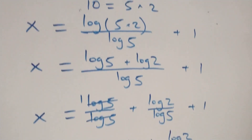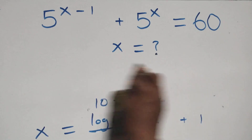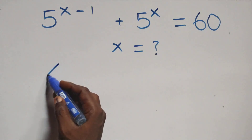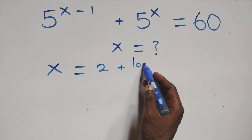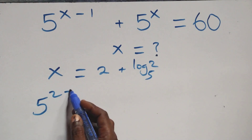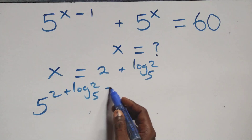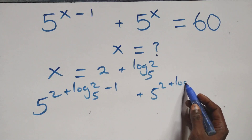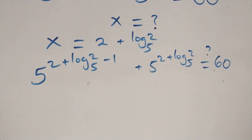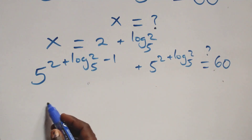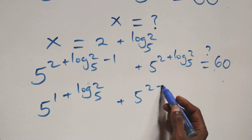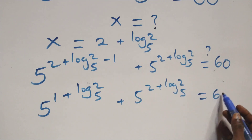Let's check whether this satisfies the given problem. We substitute x equals 2 plus log₅2 back in. This gives 5 raised to power (2 plus log₅2 minus 1), plus 5 raised to power (2 plus log₅2), equals 60. Simplifying the first exponent: 5 raised to power (1 plus log₅2), plus 5 raised to power (2 plus log₅2) equals 60.